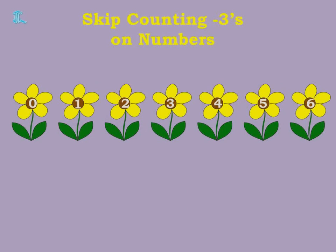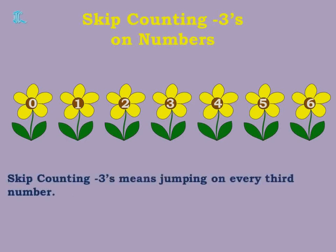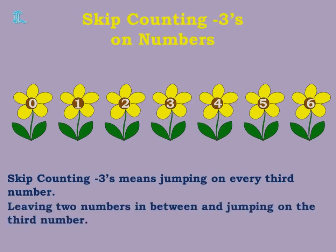Now let's learn Skip Counting by Threes on numbers. Can you see the numbers between these flowers? The numbers are 0, 1, 2, 3, 4, 5, and 6. Skip Counting by Threes on numbers means jumping on every third number — that is, leaving two numbers in between and jumping on to the third number.